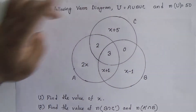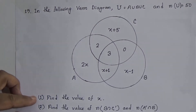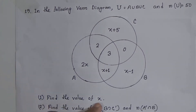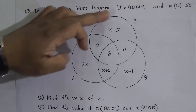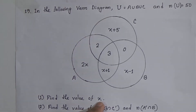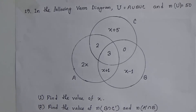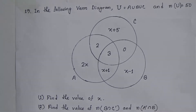Activity 1 is: find the value of X from the given figure. Activity 2 is: find the value of n(B∩C'), that means we need to find the number of elements of B intersection C prime. Activity 3 is: find the value of n(A'∩B). And we also need to find the value of n(A∩B∩C prime).